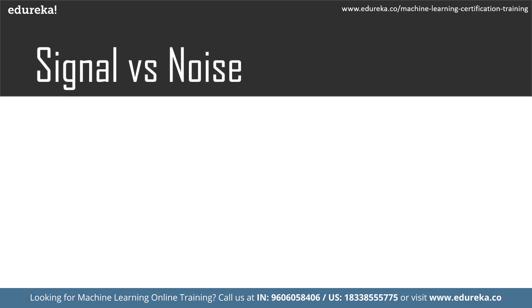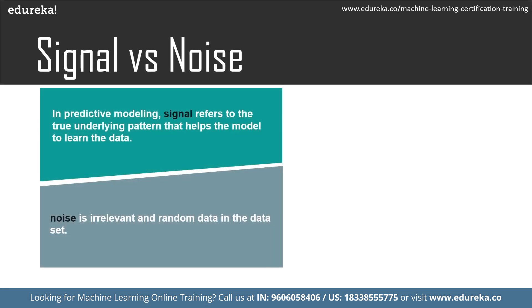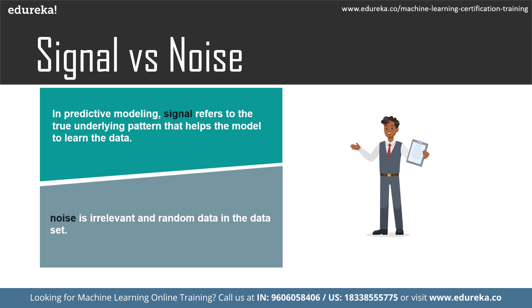Now let us understand signal and noise. In predictive modeling, signal refers to the true underlying pattern that helps the model learn the data. On the other hand, noise is irrelevant and random data in the dataset. To understand this concept, suppose we want to model age versus literacy among adults. If we sample a large part of the population, we will find a clear relationship between the two — this is the signal.